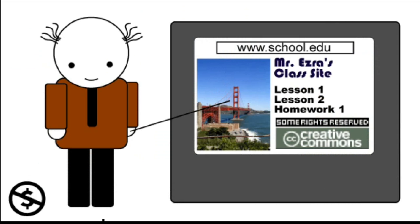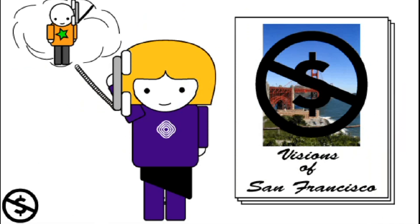So if Ezra, a school teacher, wants to put my photo on his class's website, he can do so without asking, but he still has to link to my license so other people know how they can and can't reuse it. On the other hand, if Miranda wants to include my photo in a coffee table book she's producing, since she's planning to sell the book for profit, she must get my permission before including my photo.